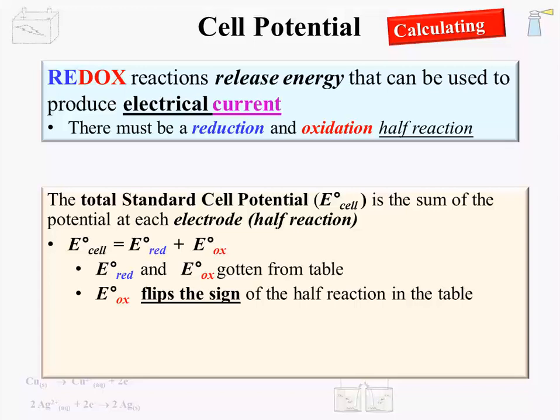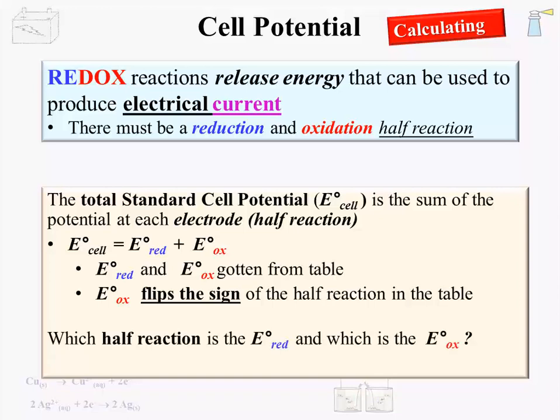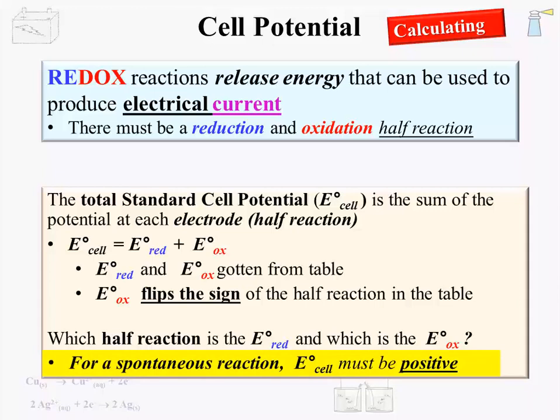That leads to a very important question: when the reaction is not given in half-reaction form, how do we determine which half-cell is the EO reduction and which is the EO oxidation? That question is answered by getting the total EO cell for the reaction written with both half-reactions taking a turn at being EO reduction. For a spontaneous reaction, the EO cell must have a positive value. If the EO reduction plus the EO oxidation gives a negative EO cell, then the assignment of oxidation and reduction is backwards.